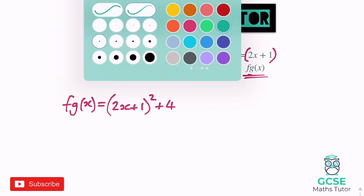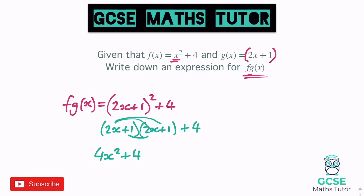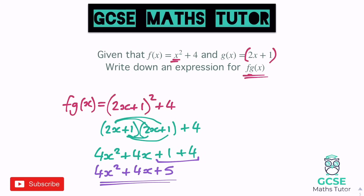So to expand, we've got the double bracket: 2x plus 1, times 2x plus 1, and then add 4 at the end. 2x times 2x is 4x squared. 2x times 1 and 1 times 2x give us 2x and 2x, which makes 4x. And 1 times 1 gives us 1. We're going to add 4 at the end. So tidying this all up, we've got 4x squared plus 4x, and then 1 plus 4 gives us plus 5 at the end. So fgx equals 4x squared plus 4x plus 5.